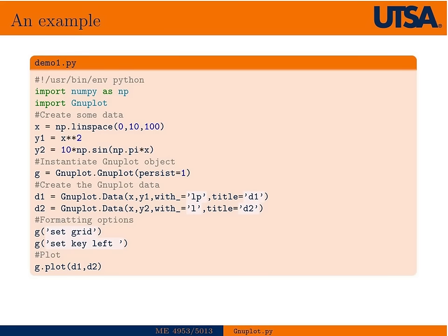So, if we look at a full example, here we would basically create a linear space, which would be our X data values. Then we're going to create two sets of Y data values. One is just X squared and the other one is this function of sine. Then we would instantiate the Gnuplot object, create data one which includes Y1, the second data which includes Y2. Then here I have some different plot directives. In the first one I'm going to say with lines points and the title is D1, and the second one with lines and the title is D2.